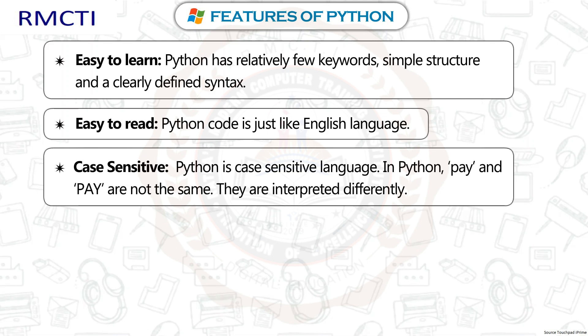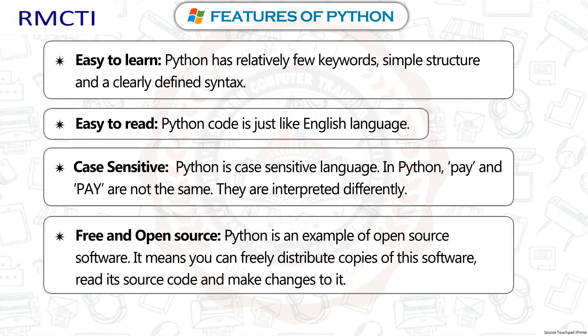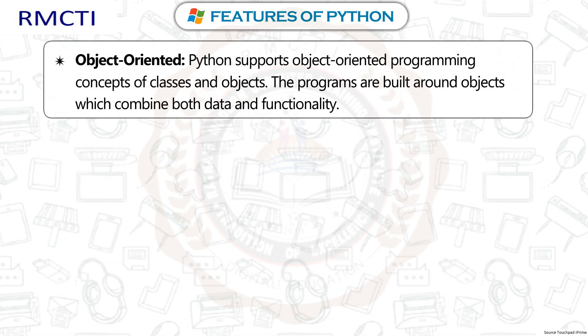Free and Open Source: Python is an example of open-source software. It means you can freely distribute copies of this software, read its source code, and make changes to it. Object Oriented: Python supports object-oriented programming concepts of classes and objects. Programs are built around objects which combine both data and functionality.